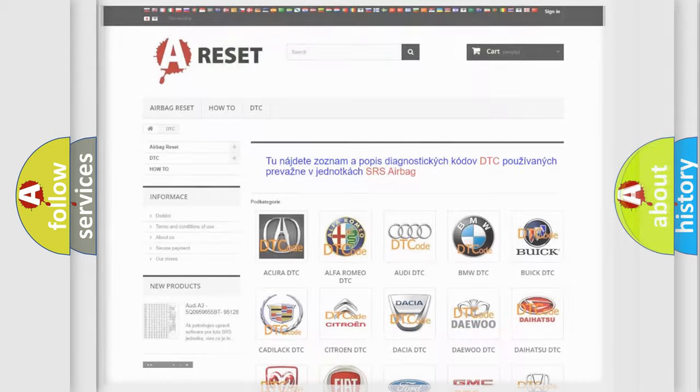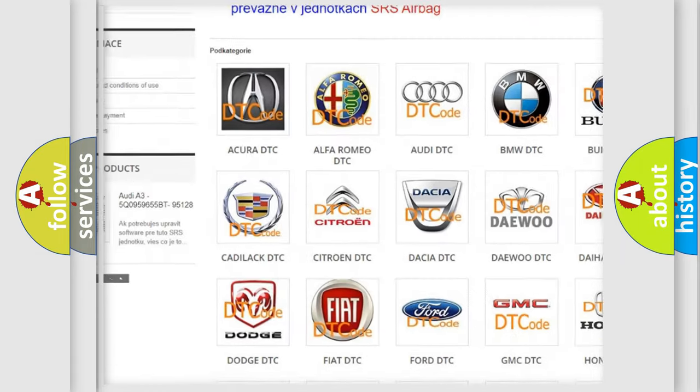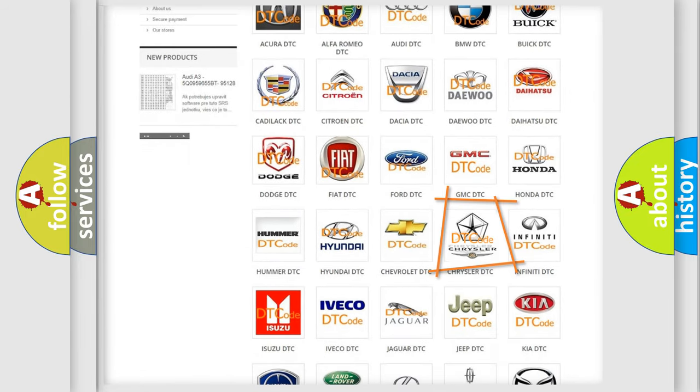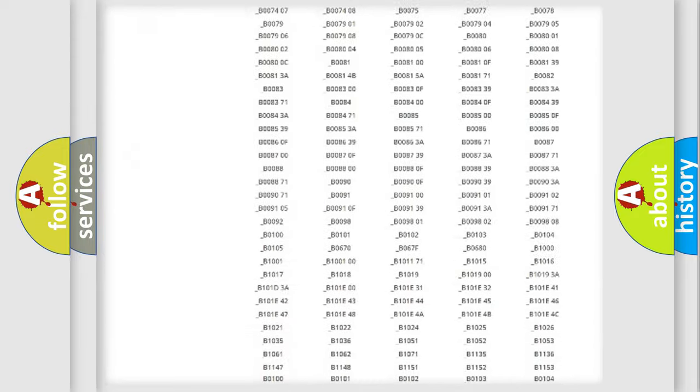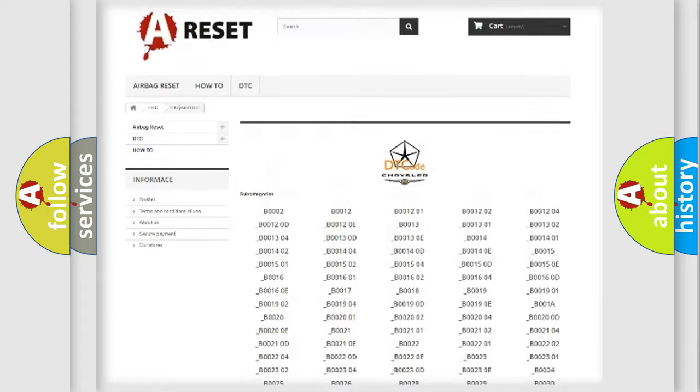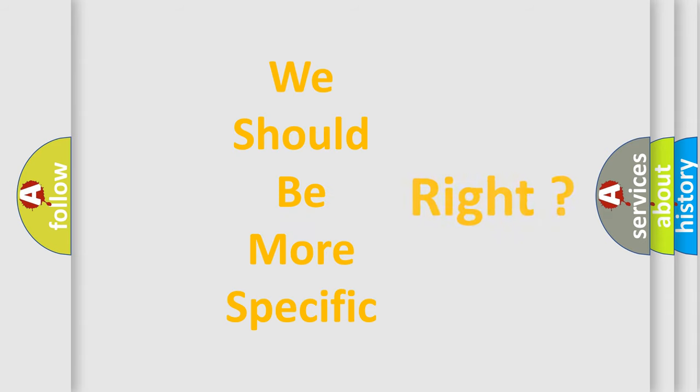Our website airbagreset.sk produces useful videos for you. You do not have to go through the OBD2 protocol anymore to know how to troubleshoot any car breakdown. You will find all the diagnostic codes that can be diagnosed in Chrysler vehicles, and many other useful things. The following demonstration will help you look into the world of software for car control units.